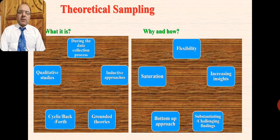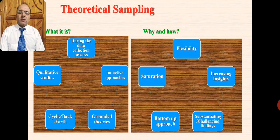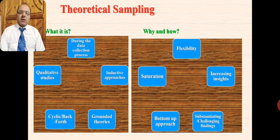Generally, as we know, sampling in most quantitative and experimental researches is done at the very beginning of the research process. In many cases, sampling is required as part of the research proposal, especially in student theses. Theoretical sampling, by contrast, generally happens during the data collection process — it is not pre-decided before the formal data collection begins.